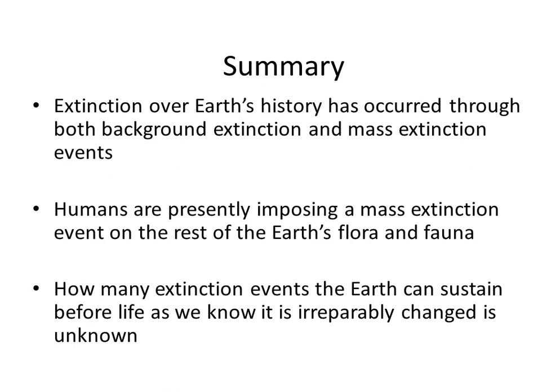In summary, extinction over the Earth's history has occurred through both background extinction and mass extinction events. Humans are presently imposing a mass extinction event on the rest of the Earth's flora and fauna. How many extinction events the Earth can sustain before life as we know it is irreparably changed is unknown.